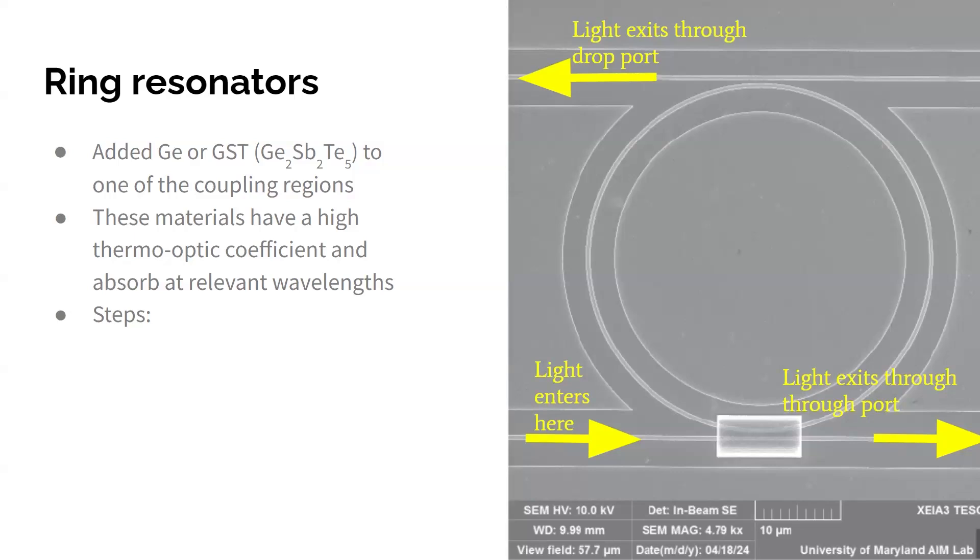So at certain wavelengths, there's almost no light exiting through this through port. And instead, we see peaks in this drop port transmission. So what we've done is add either germanium, that's what's shown here, or GST to one of the coupling regions. These materials have a high thermo-optic coefficient. So that means that the refractive index changes a lot with temperature, as well as they absorb light.